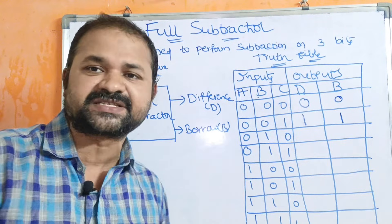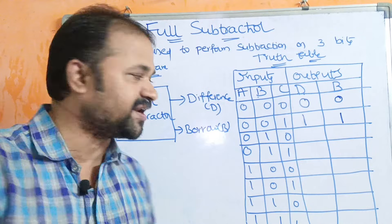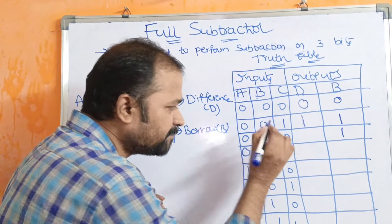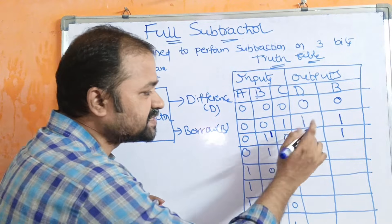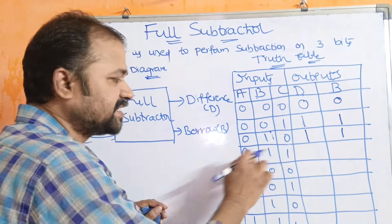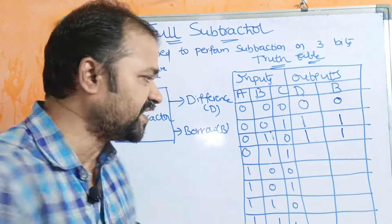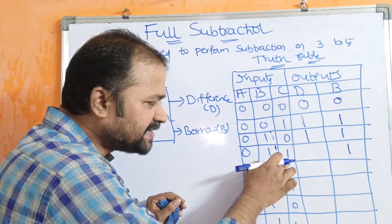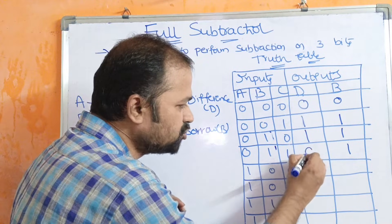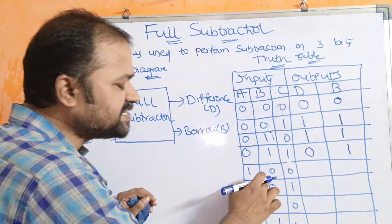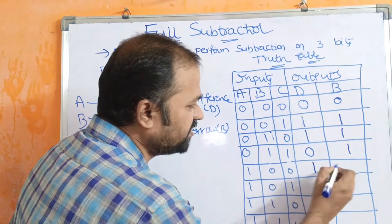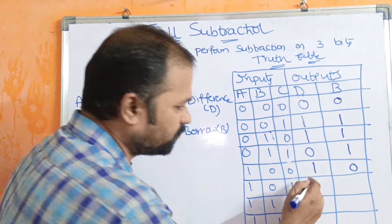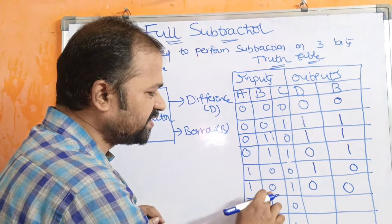For (0,1,0): 0 minus 1 gives difference 1, borrow 1. We then subtract 0 from 1, giving difference 1. For (0,1,1): 0 minus 1 gives difference 1, borrow 1, then we subtract C bit 1 from difference 1: 1 minus 1 is 0. For (1,0,0): 1 minus 0 gives difference 1, borrow 0. For (1,0,1): 1 minus 0 is 1, then 1 minus 1 is 0.